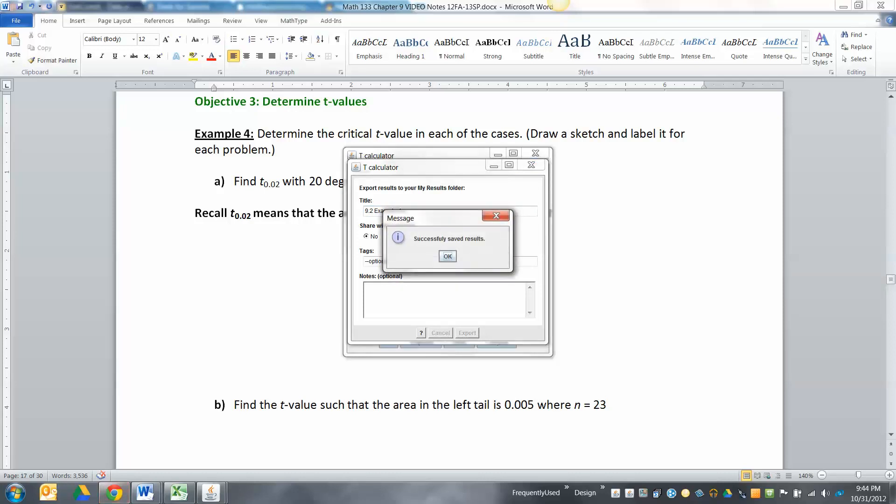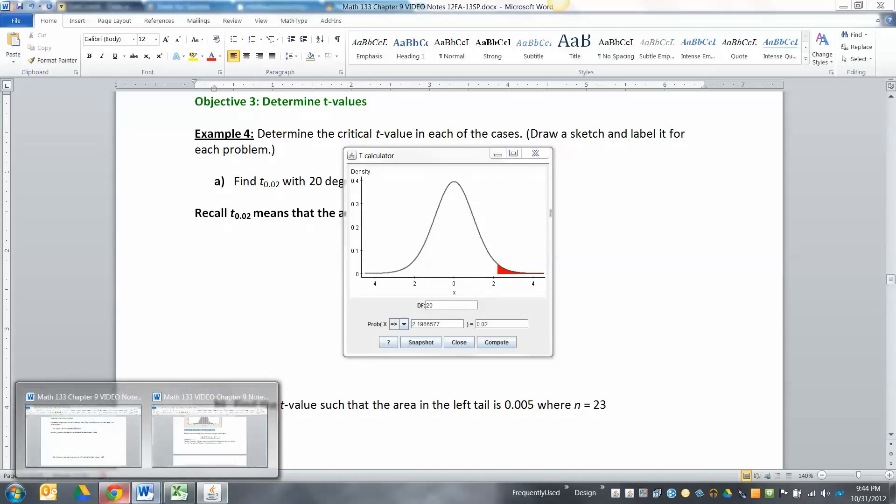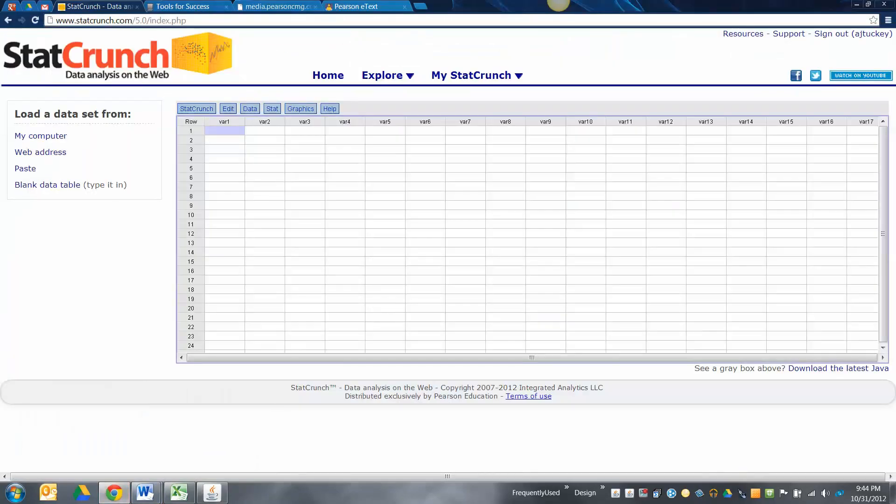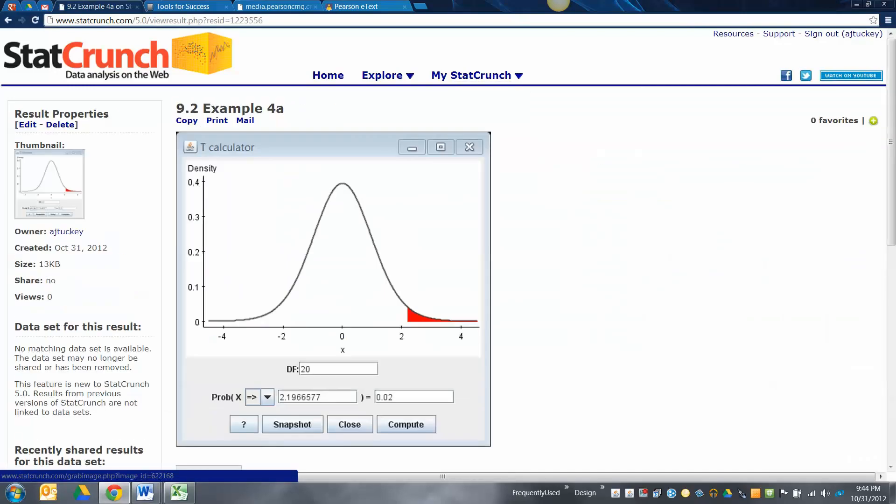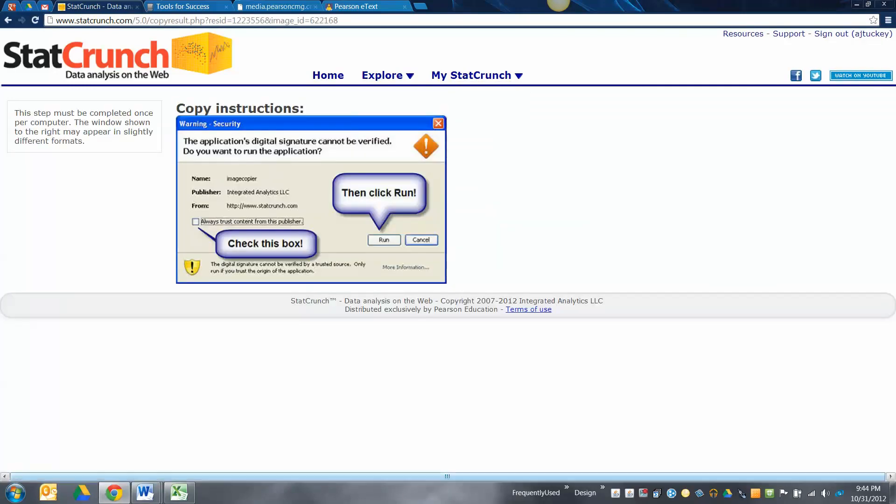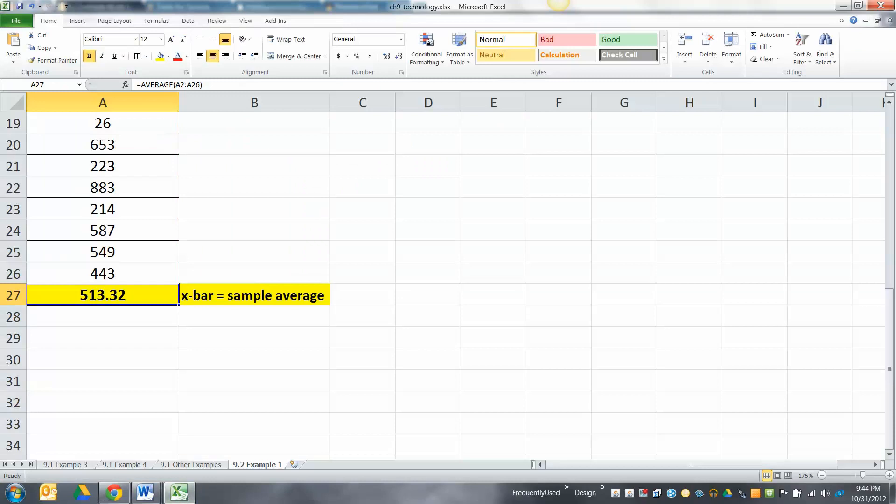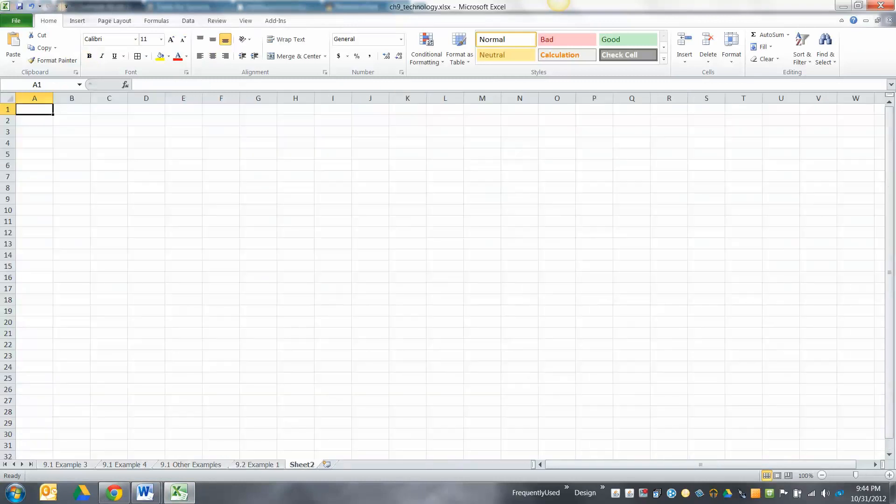Then I'll go to my results, copy, and I'm going to put this in its own thing in Excel because this is different than the pickpocket. We'll be back to the pickpocket example later, but this is 9.2 example 4.